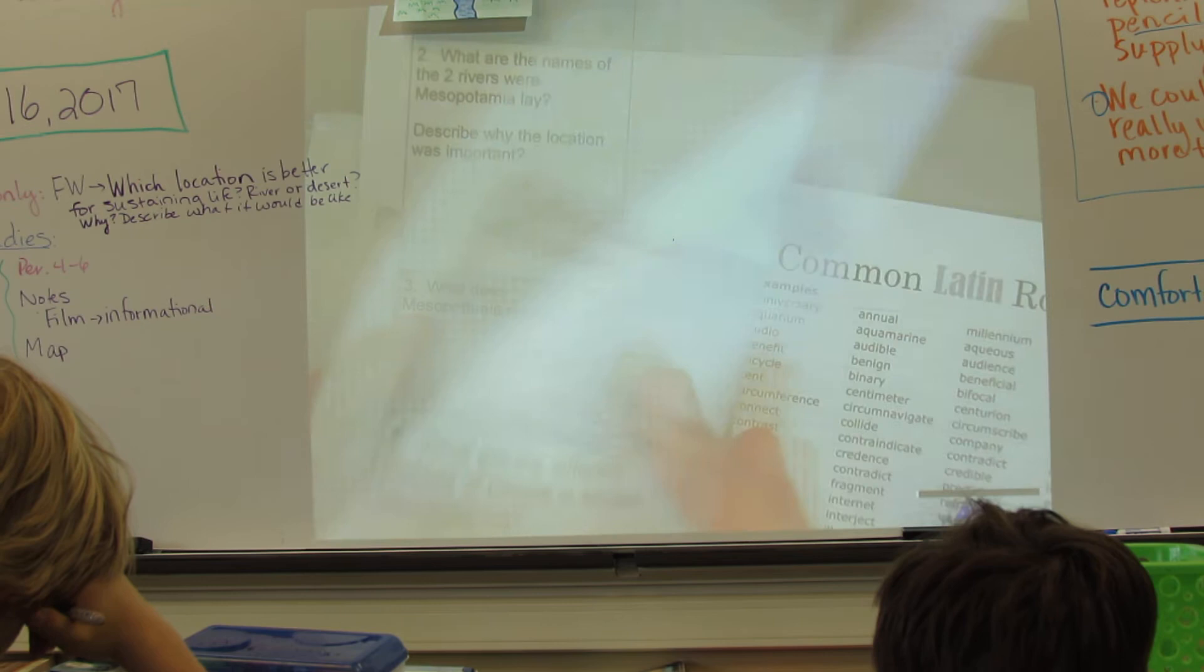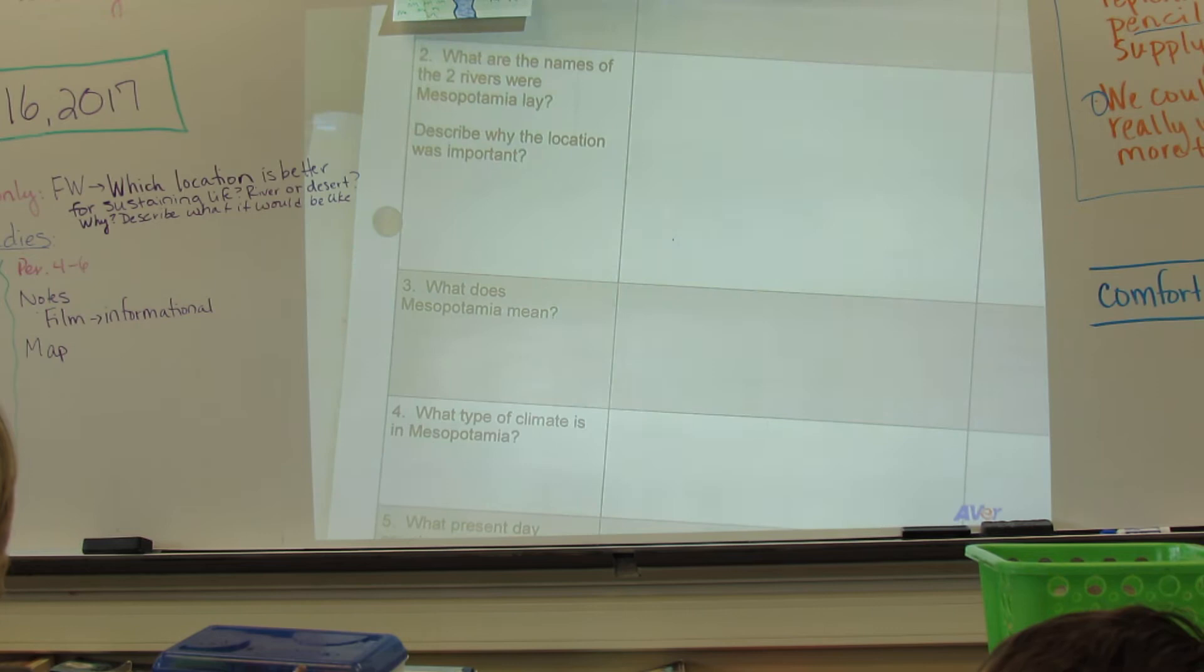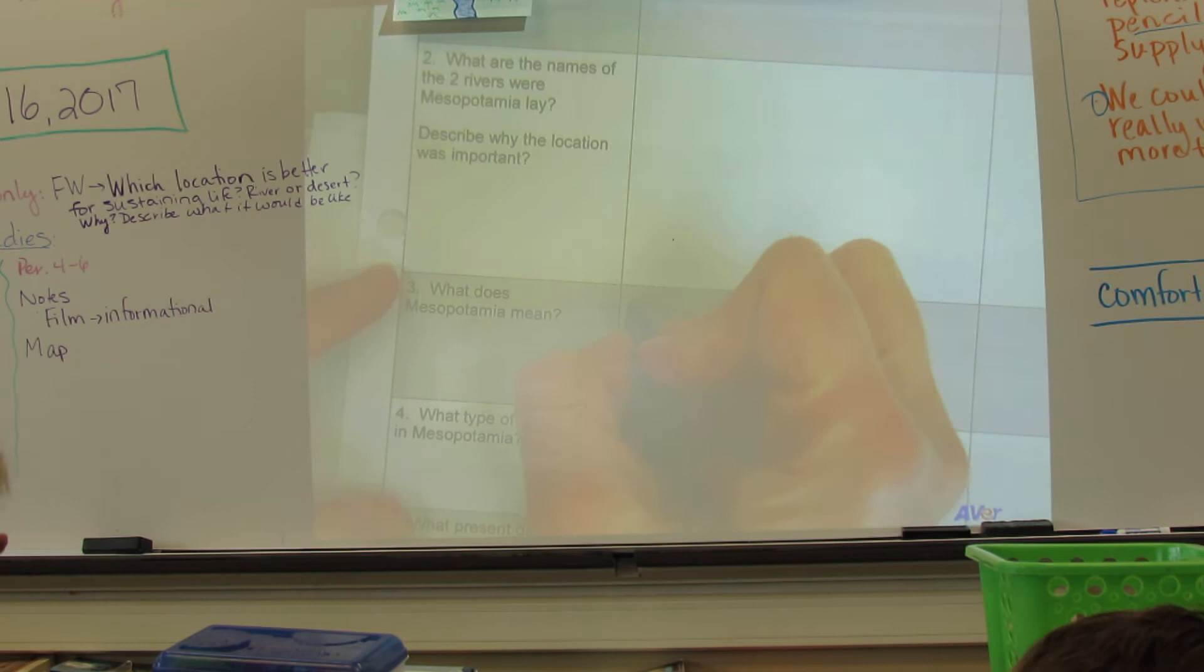What does Mesopotamia mean? But what did it say in the film? Do you remember? It means land between the rivers. Oh, land between the rivers. But let's say we weren't able to just recall that just quickly out of our head. What would we do? Rewind. Rewind.